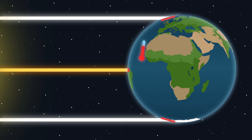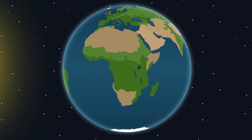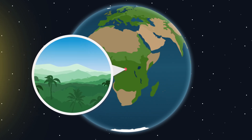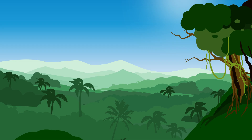This way the climate becomes warmer the closer to the equator you are. We'll take a journey on the earth from the equator to the North Pole to see what different climates we encounter — from warm to cold. We start in the Congo in Central Africa, close to the equator, where the sun shines intensely and it gets very hot.